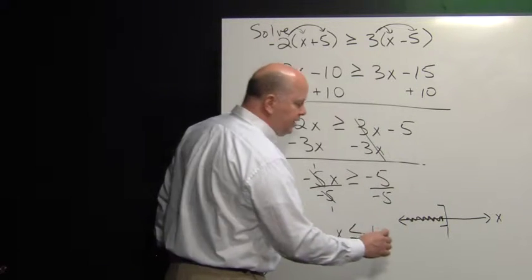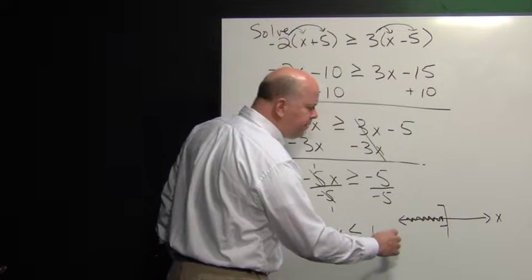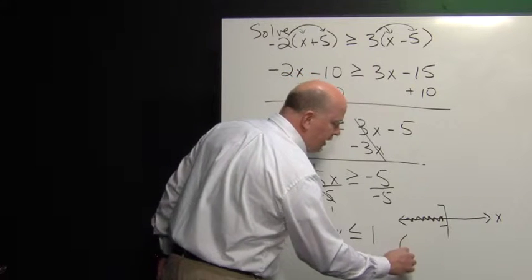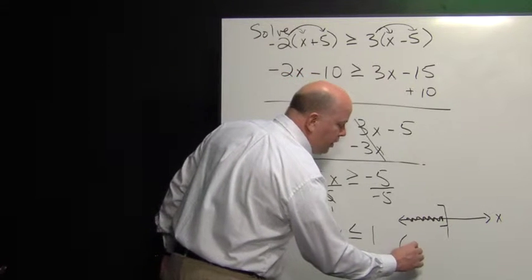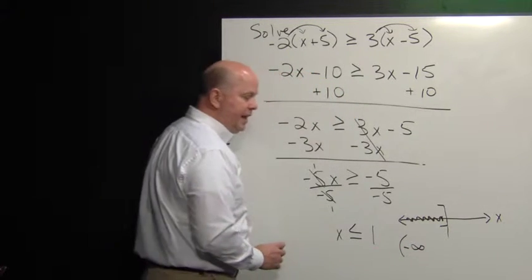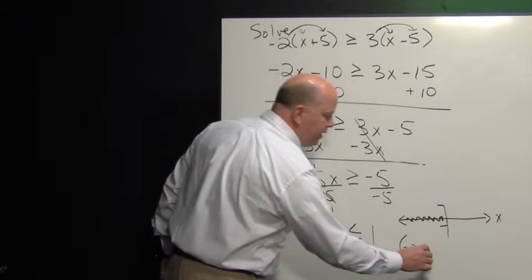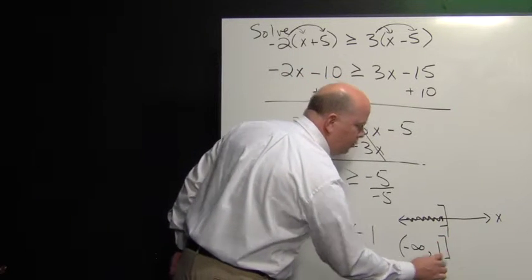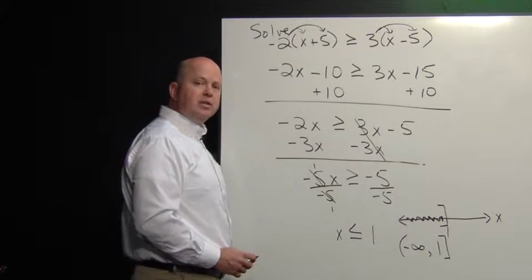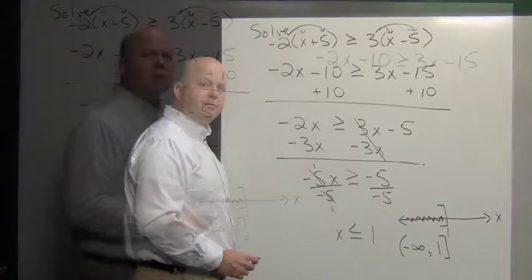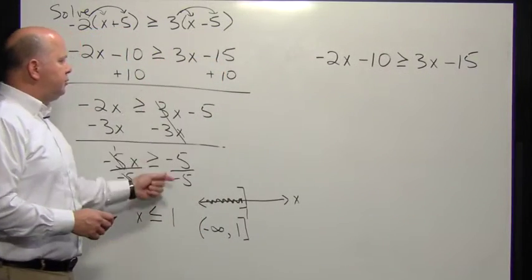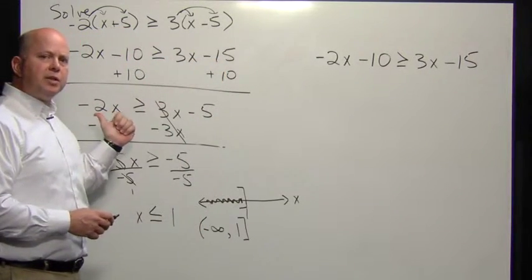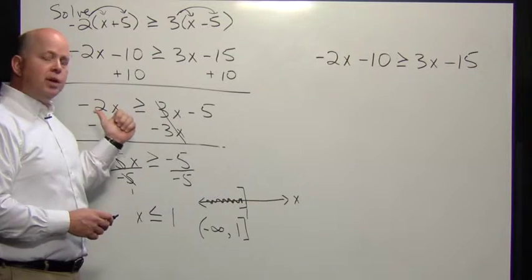This translates very nicely into interval notation. We know that our leftmost value is negative infinity, and we're going all the way to one. One is going to be included in the solution set. We had solved this by moving everything to the left-hand side of the inequality.